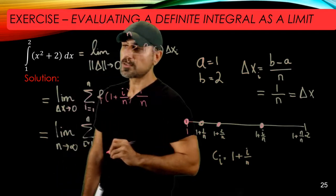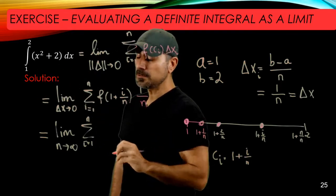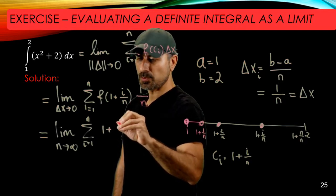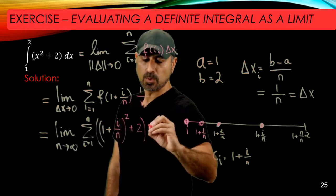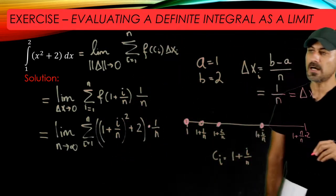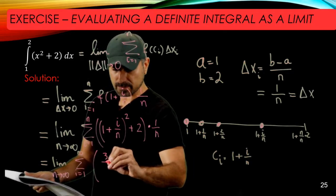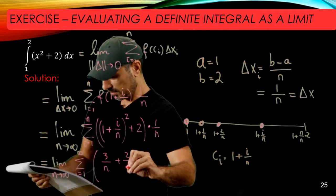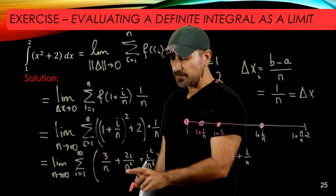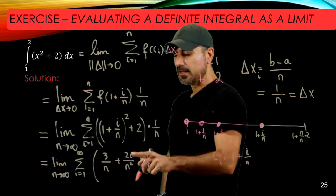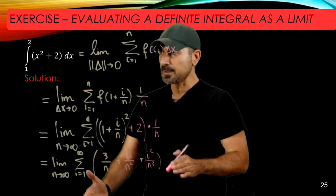We need to evaluate f(1 + i/n). Our function is f(x) = x² + 2, so substituting x = 1 + i/n gives (1 + i/n)² + 2, multiplied by 1/n. Expanding and combining like terms, this becomes: 3/n + 2i/n² + i²/n³. So we need to handle the sum of these three terms, and we split the sum into three pieces.